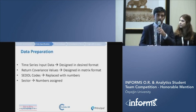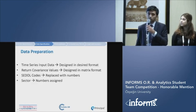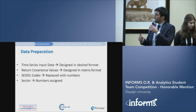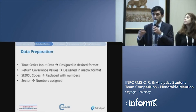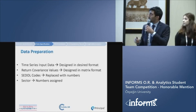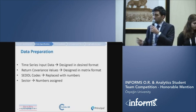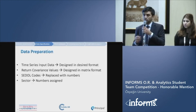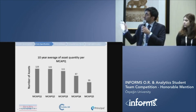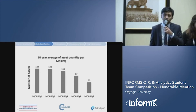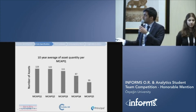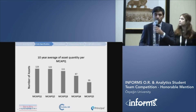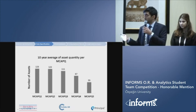I will now explain the data preparation part. To solve the problem, we need to separate the time series input data according to rebalance dates. We also need to convert the return covariance values into matrix form for use in a computer environment. We replaced CEDOR codes with numbers for computational use, and assigned 11 different numbers to the sector values for computational easiness. This 10-year average asset quantity per mcap quantile graph is important: 50% of the assets fall in mcap quantile 1 and 2, which caused some problems in the solution process.